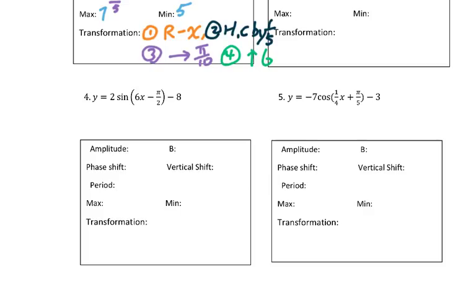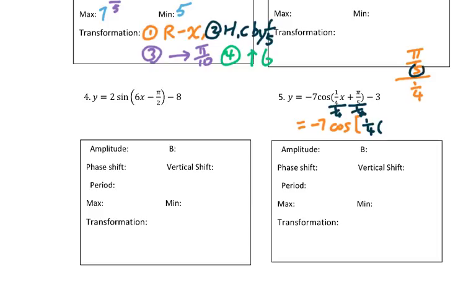Let's go to number 5. First, you have to change this function into transformed form. We have negative 7 cosine. We will take out 1 over 4, so divide by 1 over 4. π over 5 divided by 1 over 4: the 5 drops down and the 4 goes up, giving 4π over 5. So we get x plus 4π over 5, then minus 3.